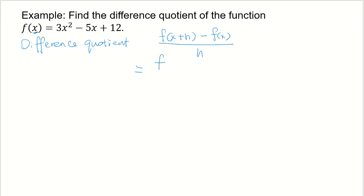Let me erase this. What I mean is 3 times x plus h squared minus 5 times x plus h plus 12. So far this part is f of x plus h.